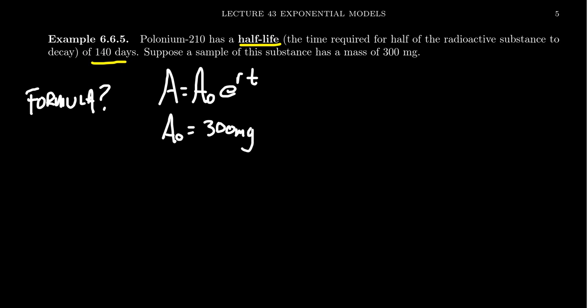Then the rate we don't know, but we do know the half-life. The thing is after 140 days, the amount is going to turn into half of that amount, which is 150. So you get 150 equals 300 times e to the r times 140, the number of days that have passed.